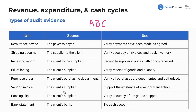The vendor invoice comes from the supplier. When you buy something like planks of wood, the supplier sends you an invoice stating the amount owed, quantity, and dollar amount. It is used to support the existence of a vendor transaction. The packing slip also comes from the client's supplier and is used to verify the accuracy of goods shipped — you'll find it in the box listing what should be inside, such as ten planks of wood.